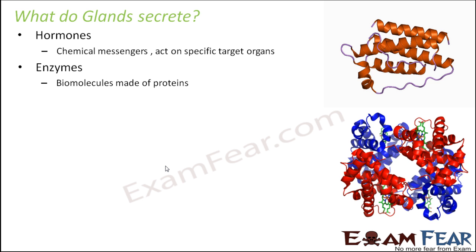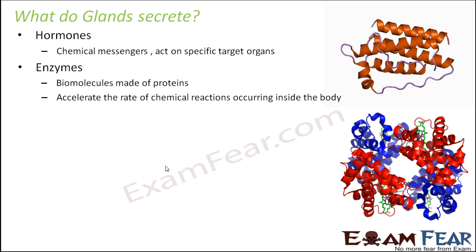Glands can also secrete enzymes. Enzymes help in the chemical reactions taking place inside our body. Enzymes are biomolecules made up of proteins, and they accelerate the rate of chemical reactions — they act as catalysts. When we talked about digestion or respiration, many enzymes are involved: for example, during digestion of proteins, fats, and carbohydrates, enzymes like lipase, amylase, and protease are involved, and without those enzymes the reactions cannot take place.